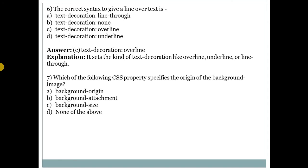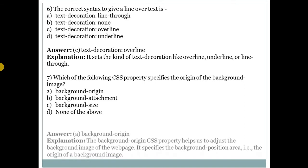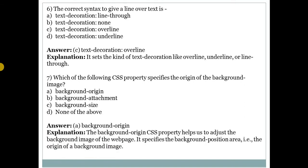Seventh question: which of the following CSS property specifies the origin of the background image? Answer is A — background-origin. This property helps us to adjust the background image of the web page.